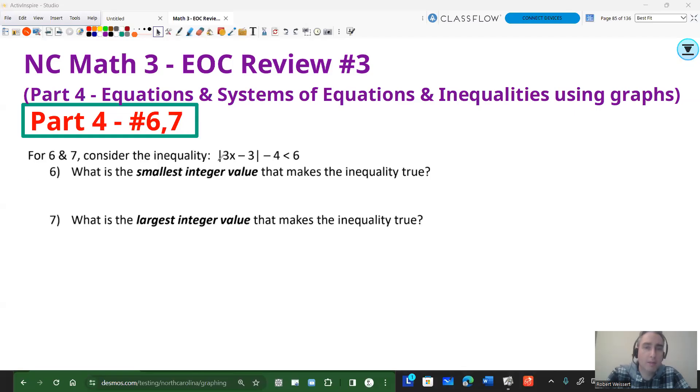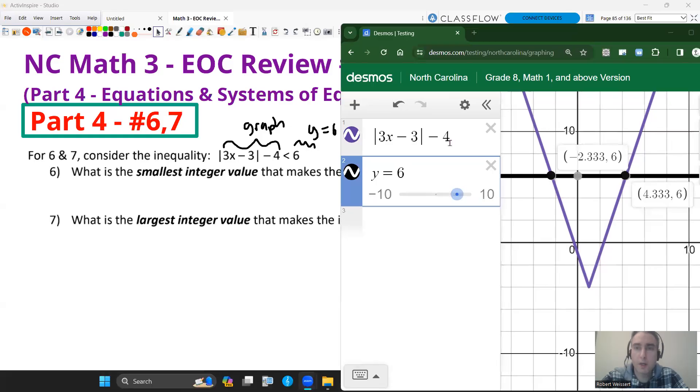So the question says, the inequality, absolute value 3x - 3 minus 4 is less than 6. We're going to find that inequality and sketch it out first. So the first thing I want to do is I want to treat this as an equal. I want to graph this on the left side. And then I want to just say y equals 6 and graph that as well. So let's go ahead and do that graph right now. Here's how it's keyed in. When I zoom back in to see kind of where those points of intersection are, I get about -2.333 and 4.333.